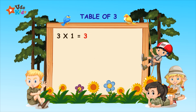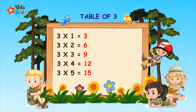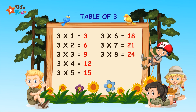Three ones are three. Three twos are six. Three threes are nine. 3 4s are 12. 3 5s are 15. 3 6s are 18. 3 7s are 21.